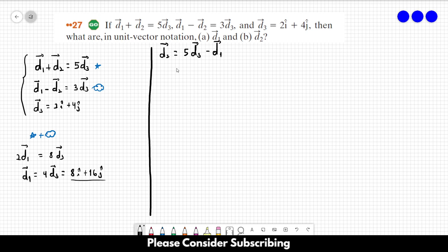And this would be equal to, let's see, 10i plus 20j minus 8i minus 16j. And this is equal to 2 in the i direction plus 4 in the j direction. So this is the answer of letter b.